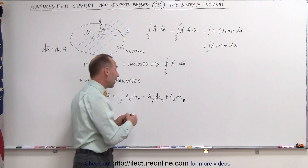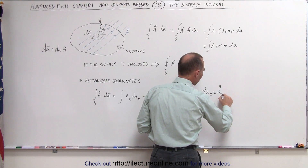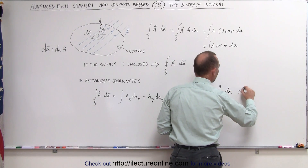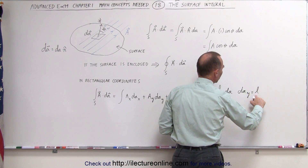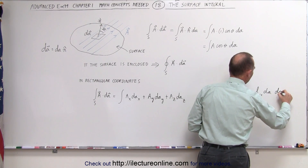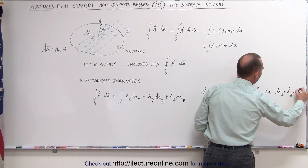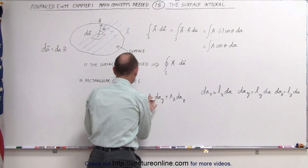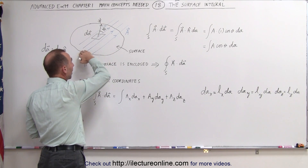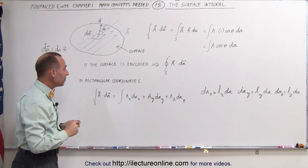Also remember that you can find dA sub x — that is simply the direction cosine between the unit vector and the x-axis multiplied times dA. We can say that dA sub y can be found by taking the direction cosine between the unit vector and the y-axis times dA, and dA sub z can be written as the direction cosine between the unit vector and the z-axis multiplied times dA. That's how we find the individual area elements, which are the projections onto the xy, xz, and yz planes — giving us the rectangular coordinates for that same integral.